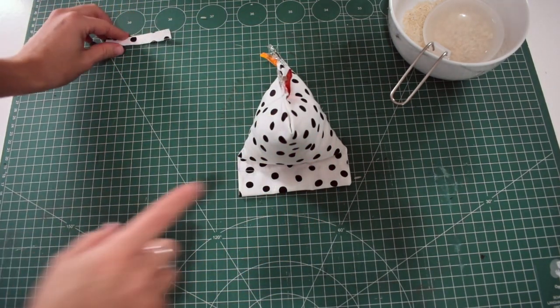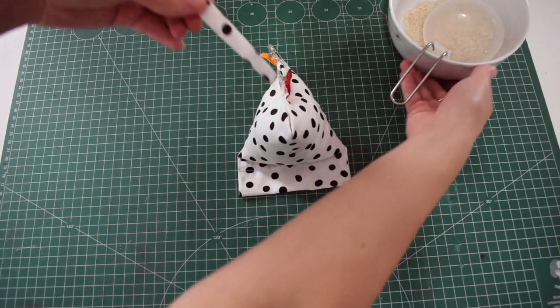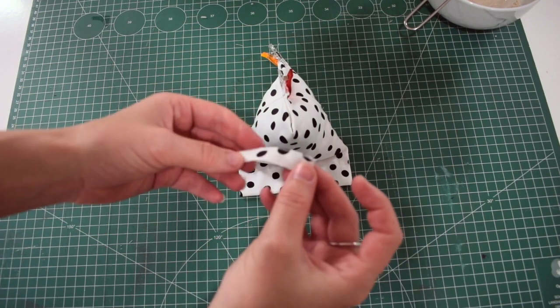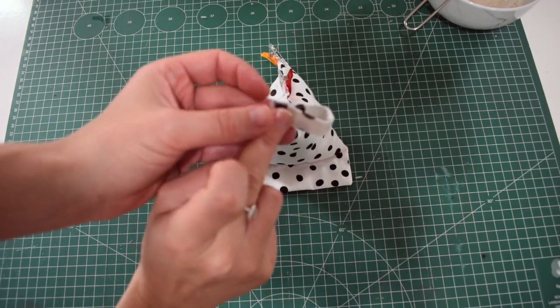We're going to now add the little toggle on the top. We're going to fold this in half and we're going to place this in the corner and then we're going to clip this in place so it holds.